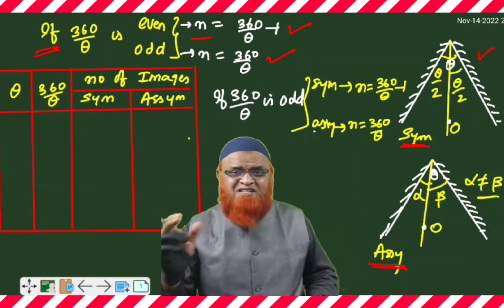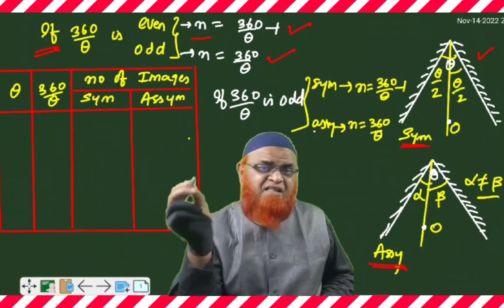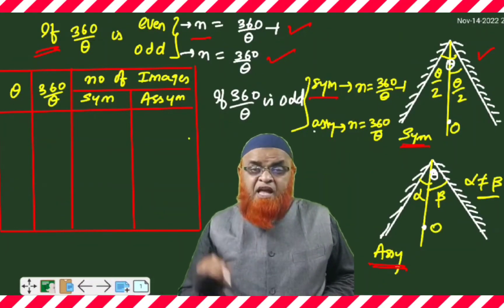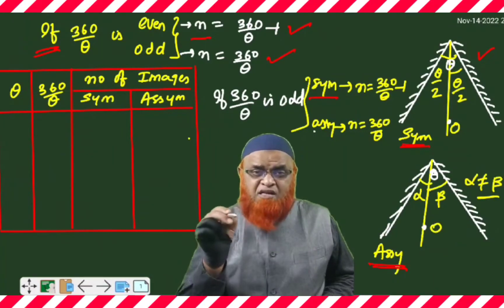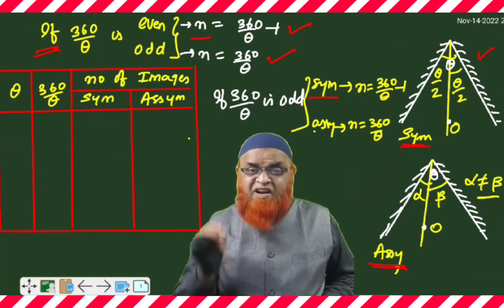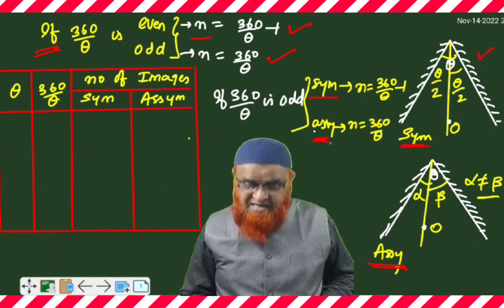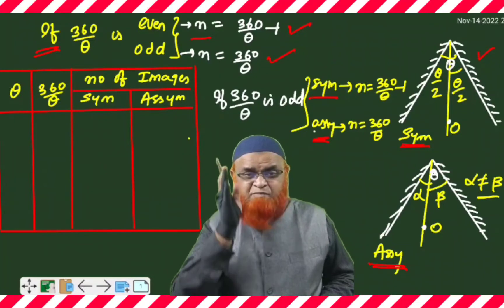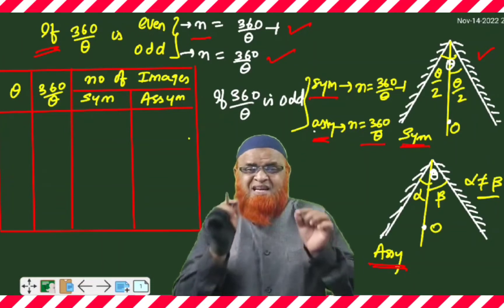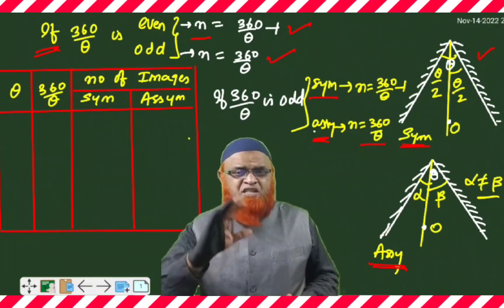There are sub-conditions when 360 divided by theta is odd. If it is the symmetry case, the number of images is (360/θ) − 1. If it is the asymmetry case — meaning the object is not kept exactly at the bisector but a little bit aside — then the answer is just 360/θ as it is.